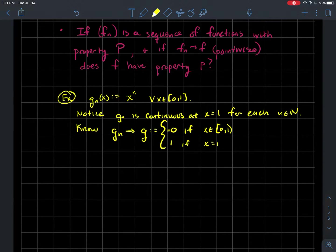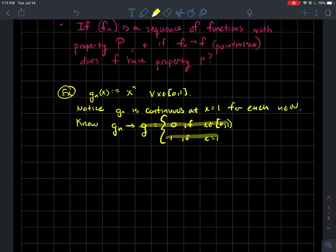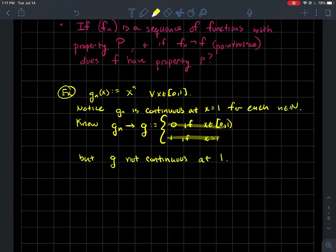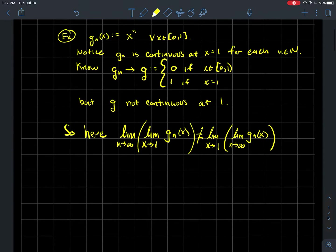Each g_n is continuous at one. My question is: should I expect g to be continuous at one also, since it's the limit of a sequence of functions that are each continuous at one? Of course, you see the answer is no — this limit function is definitely not continuous at one. It makes a huge jump from zero to one in its y-values.